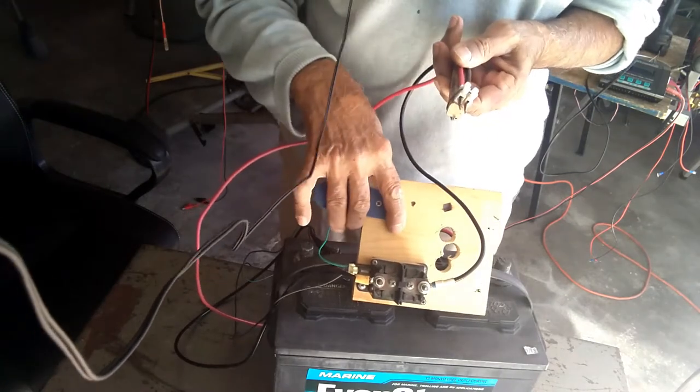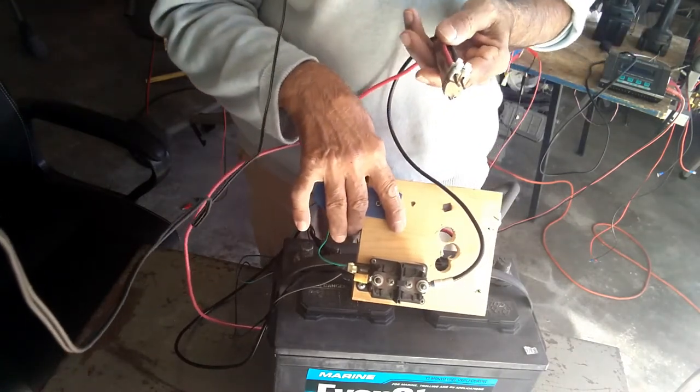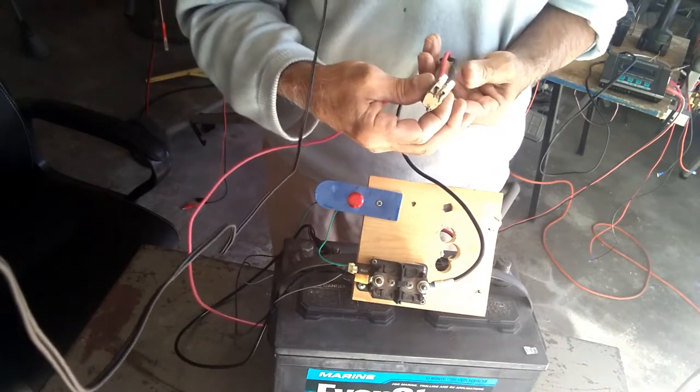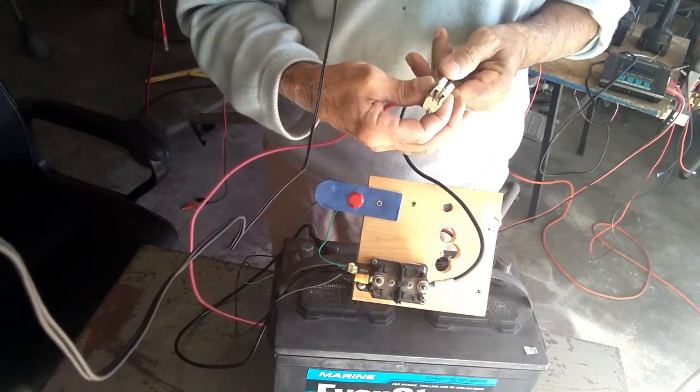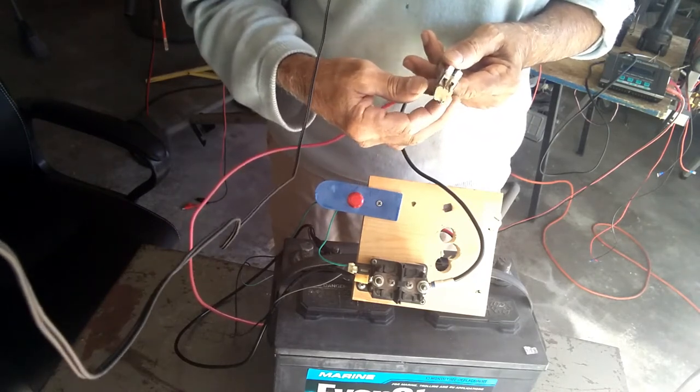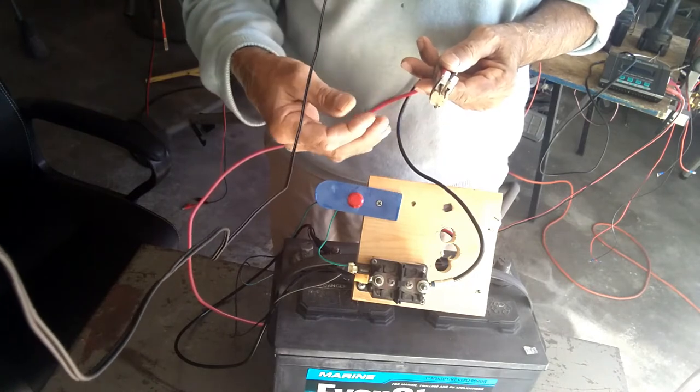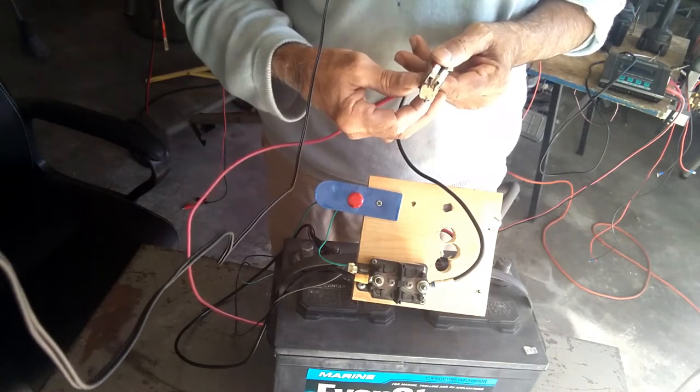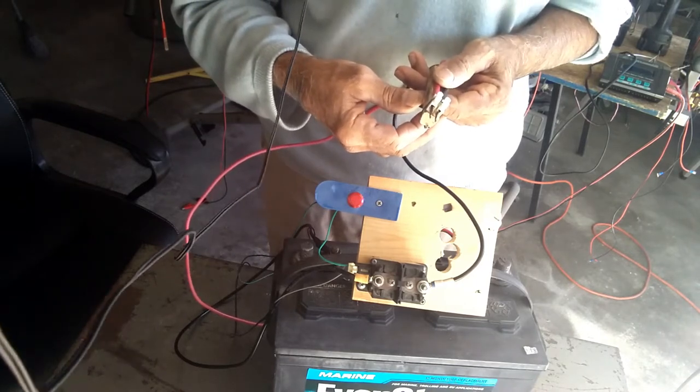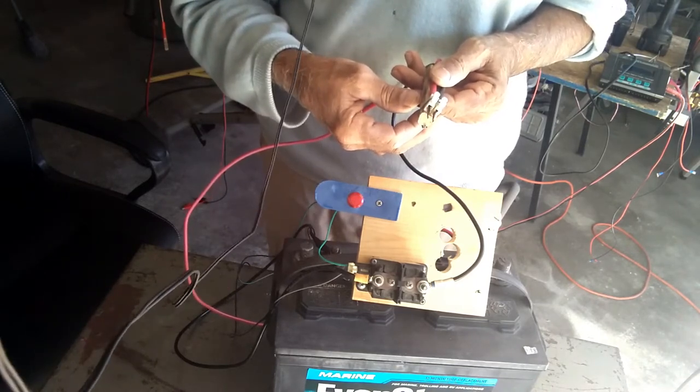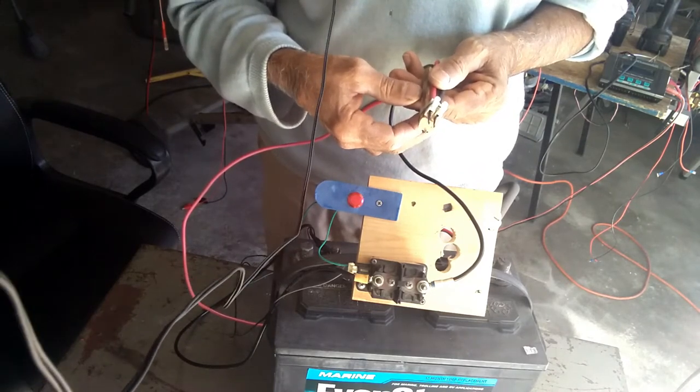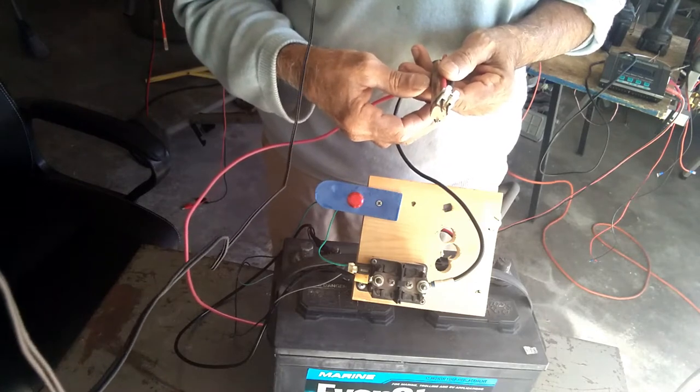It's a spot welder and this is used to spot weld and make power packs with the 18650 batteries. And I've seen a lot of videos on YouTube and I've tried different things, even I bought one spot welder, a stupid gadget which is about I think $25 and they don't do the job that they talk about doing.